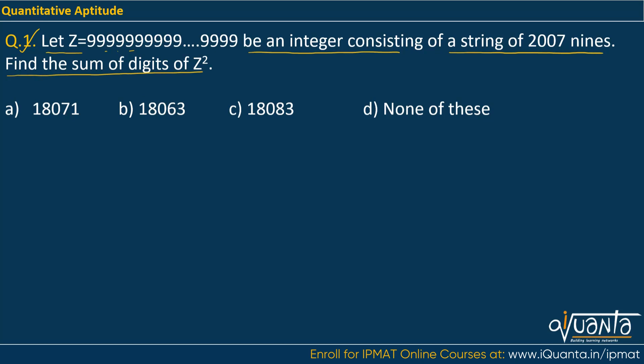Now how to solve this question? See, 99 is a very special number. You must remember 99² is 9801. But here we have to multiply 2007 nines to 2007 nines. If we try to find a particular pattern: 999² will be 998001. Similarly, 9999² will be 99980001.